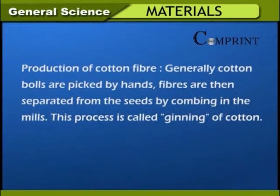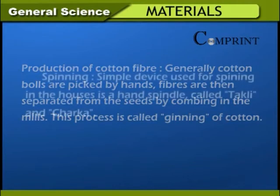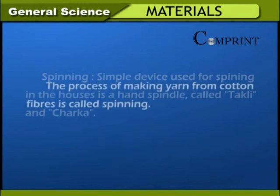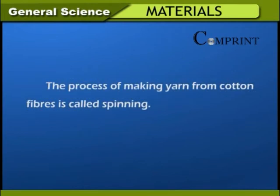Production of cotton fiber: Generally, cotton balls are picked by hand. Fibers are then separated from the seeds by combing in the mills — this process is called ginning of cotton. Spinning: The simple device used for spinning in houses is a hand spindle called takli and charka. The process of making yarn from cotton fibers is called spinning.